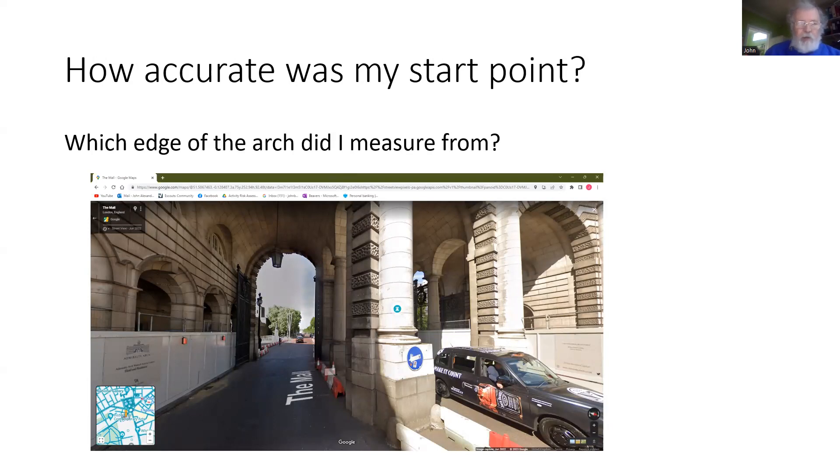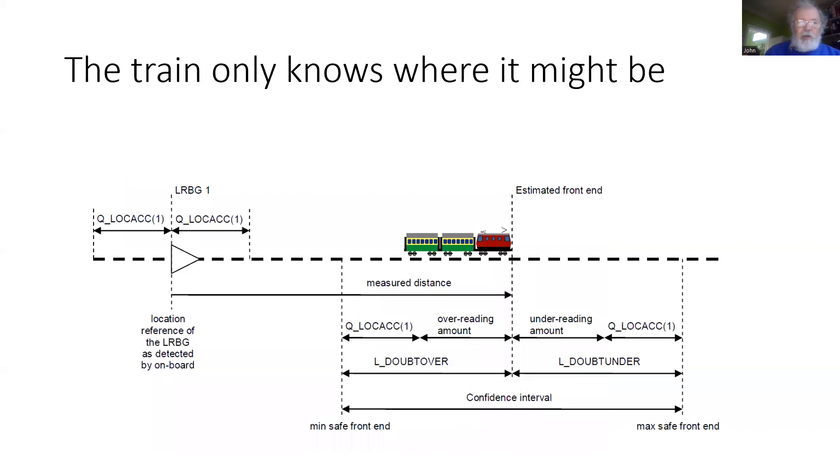If we had measured from the far side, that could be an increase of, say, 10 or 15 metres. If we had measured from the near side, that would be different. Or perhaps we'd measure from the middle. So ETCS, when it is reporting its distance from a reference point, takes account of the potential inaccuracy of that origin.